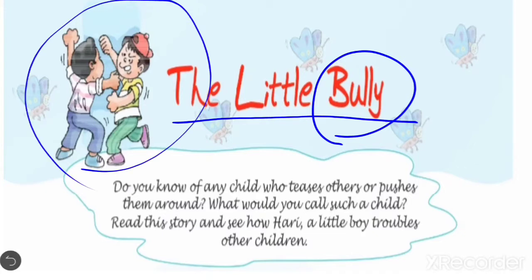Look at this picture — two boys are fighting with each other, so definitely one boy is stronger than the other. 'Little' means small. So 'The Little Bully' means the small boy who uses his strength or power to hurt another boy who is weaker than him. In this lesson we will see one small child who is behaving in a different way with other children — he is hurting them, and he is quite stronger than them.